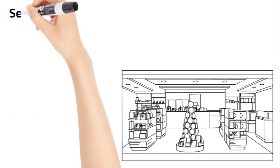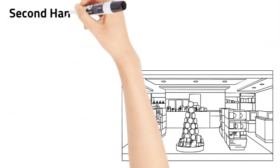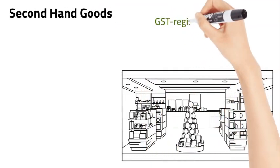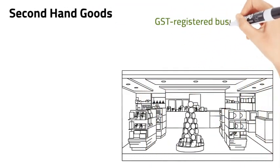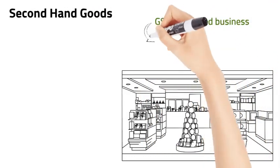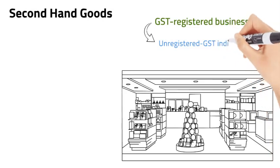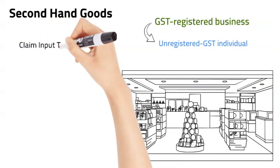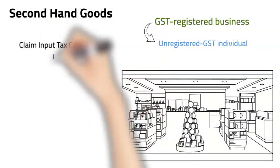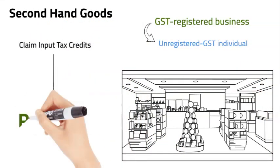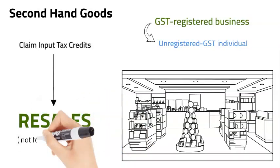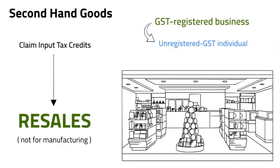Secondhand goods: if you are a GST-registered business acquiring secondhand goods from an individual not registered for GST, you can still claim input tax credits, provided the goods are acquired for resale and not for manufacture.